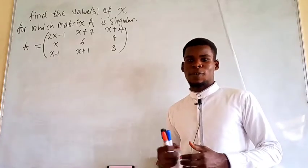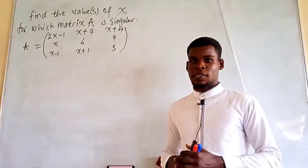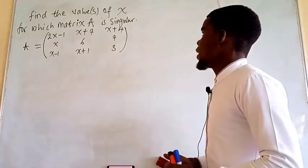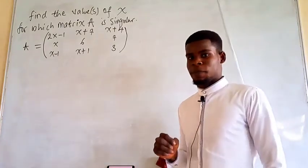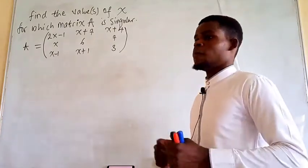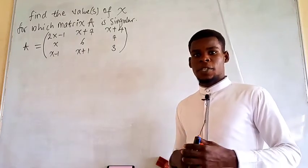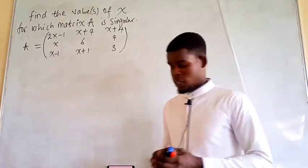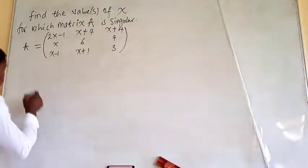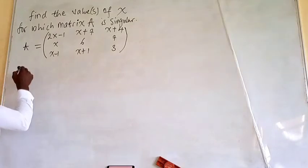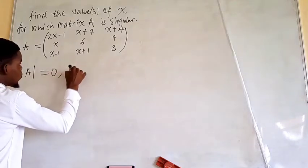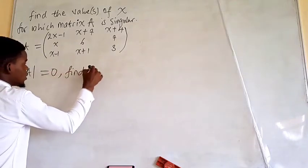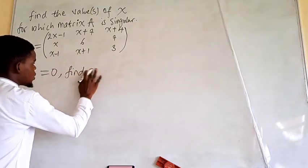In this video, I want to do a little bit of a matrix problem. Find the values of x for which the matrix A is singular. By the singular nature of a matrix, we mean that the determinant of the matrix should be 0. So, find x — in other words, the statement says find x such that the determinant of A is going to be 0.